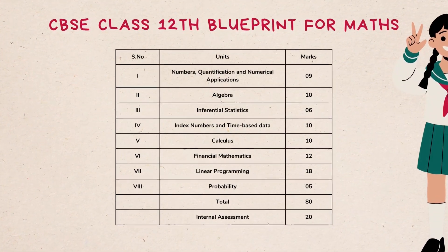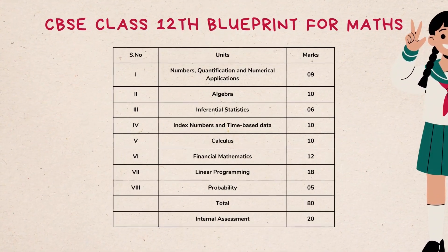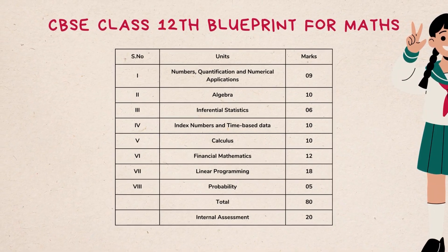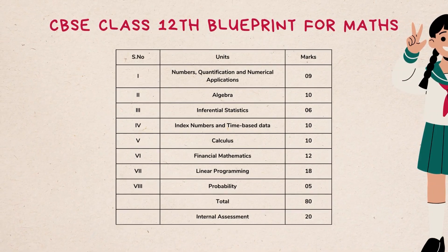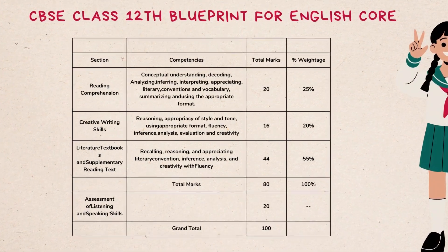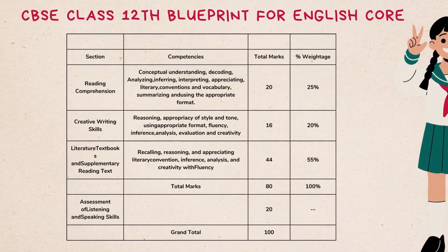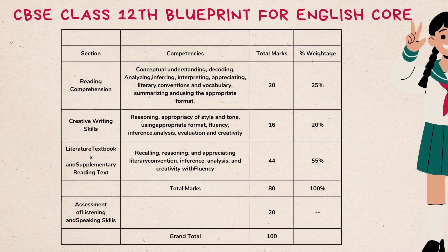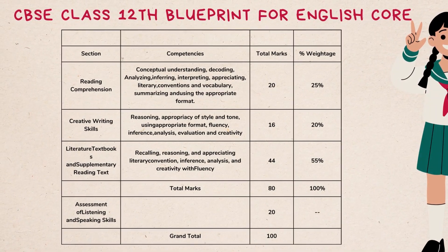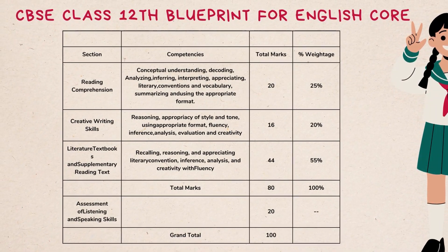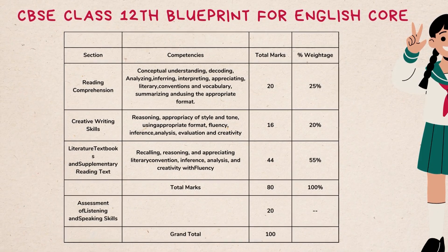The CBSE Class 12th blueprint for Applied Mathematics is in the following table. CBSE Class 12th English Core consists of four major sections — find the detailed CBSE Class 12th blueprint for English Core given on screen.